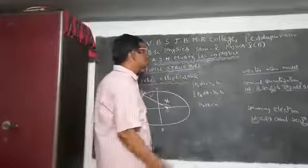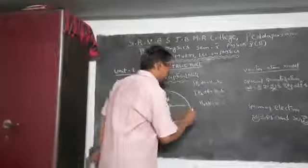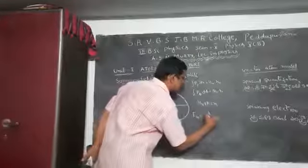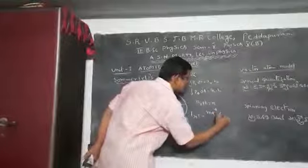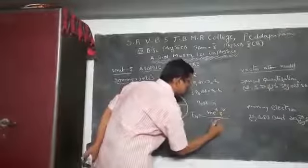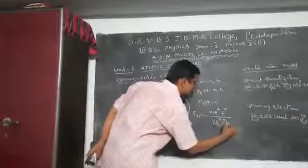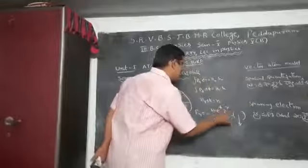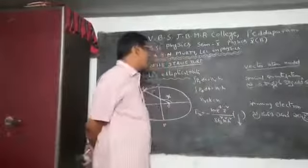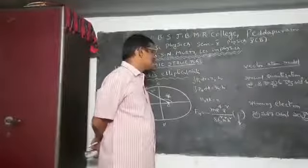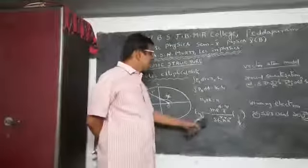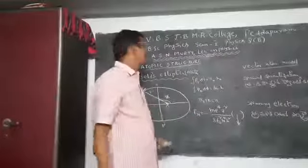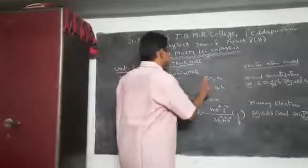By using these quantum conditions, Sommerfeld can derive an expression for energy: E_n is equal to minus m e⁴ Z² divided by 8 ε₀² n² h². This expression is the same as the one derived in Bohr's theory. That is why Sommerfeld makes another attempt.